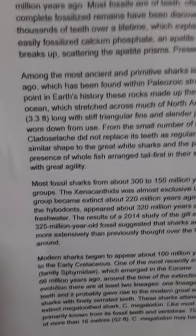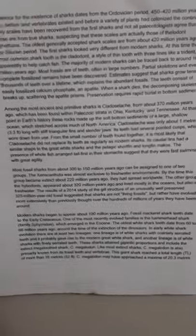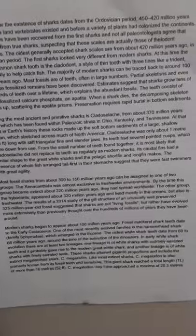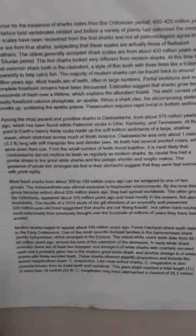Most fossil sharks, from about 300 to 150 million years ago, can be assigned to one of two groups. The Xenacanthida was almost exclusive to freshwater environments. By the time this group became extinct about 220 million years ago, they had spread worldwide. The other group, the Hybodontiformes, appeared about 320 million years ago and lived mostly in the oceans, but also in freshwater.